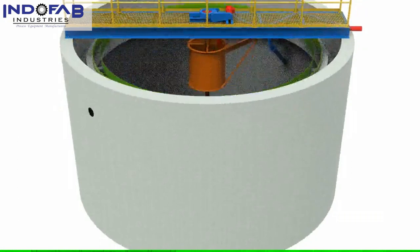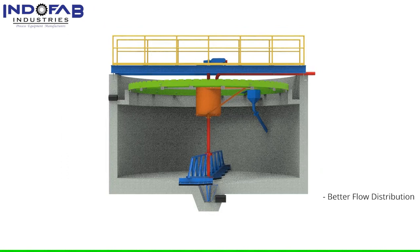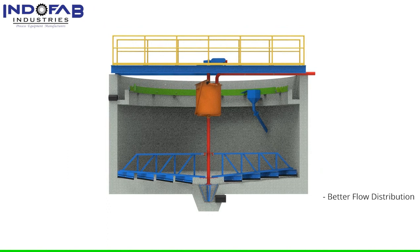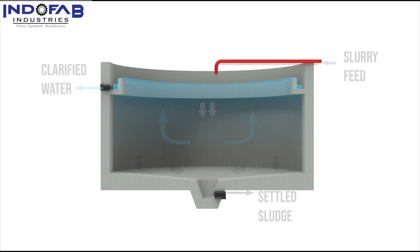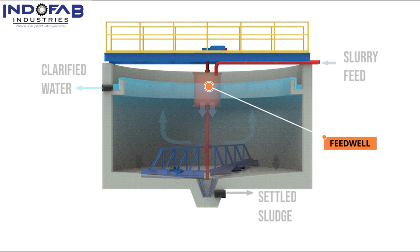There is a wide variety of circular clarifiers. This is a centrally driven circular clarifier with skimmer. It is generally preferred because of the better flow distribution. Let's take a look inside the tank to understand further. The slurry or suspension enters the tank approximately in the center through the red feed pipe. Most of the kinetic energy is absorbed by the energy dissipating feedwell, which, being partially submerged, also restricts the surface disturbance to the tank.